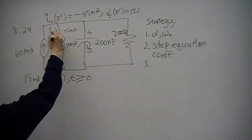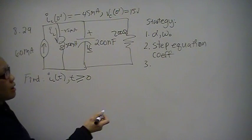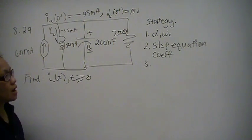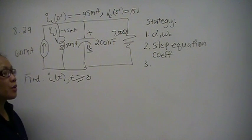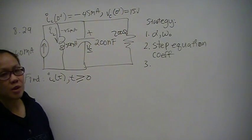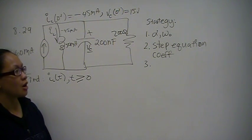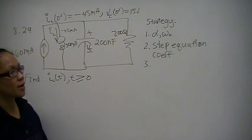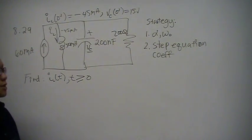We're supposed to find the general equation for the current through the inductor. The strategy is we will need to find alpha and omega-naught, because comparing alpha with omega-naught will tell us what type of response this will be — whether it's overdamped, critically damped, or underdamped. Knowing the type of response tells us what equation we're using and what coefficient equations we'll be using.